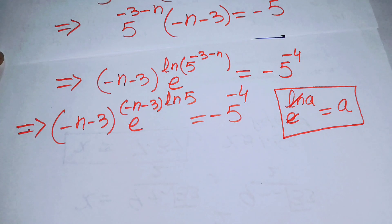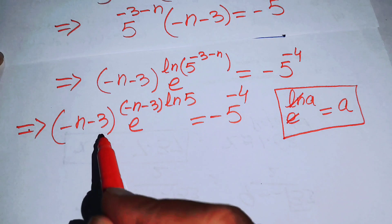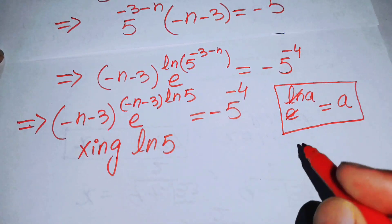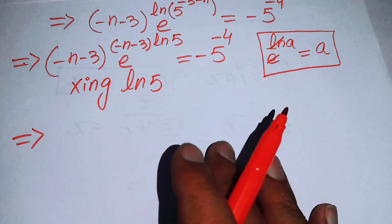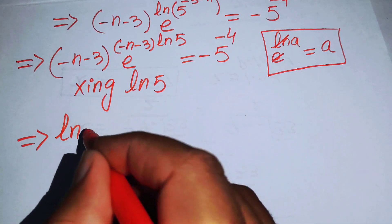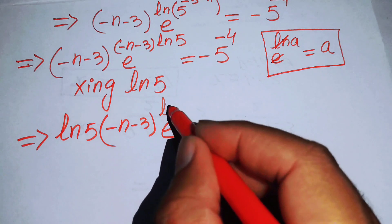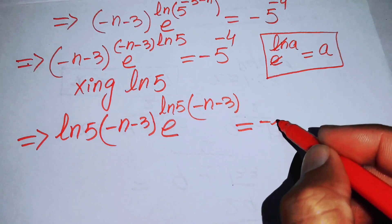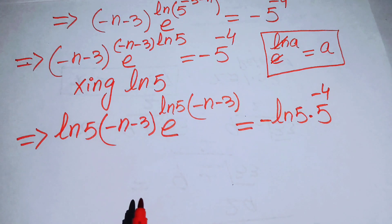We can see the exponent of e is minus n minus 3 times log 5, and we also have minus n minus 3 out front. To complete the Lambert W form, we multiply both sides by log 5, giving us log 5 times minus n minus 3 times e to the power of log 5 times minus n minus 3 equals minus log 5 times 5 to the power of minus 4.